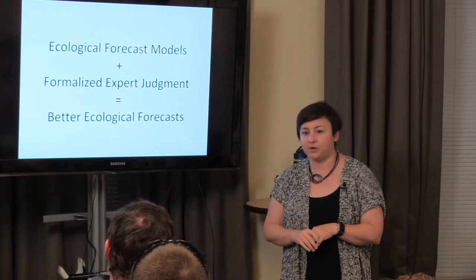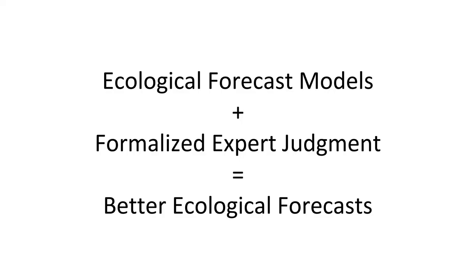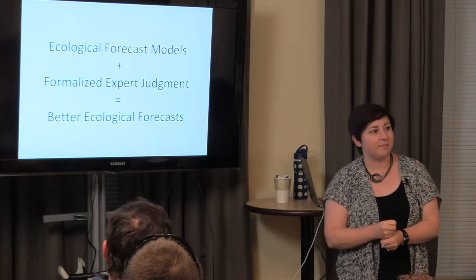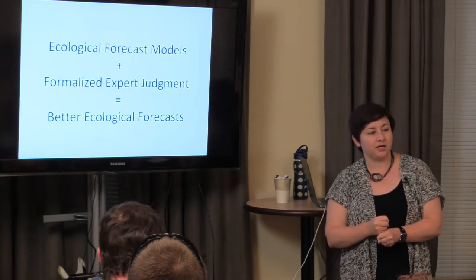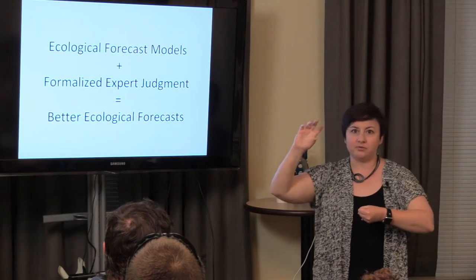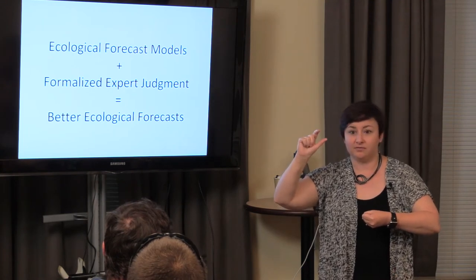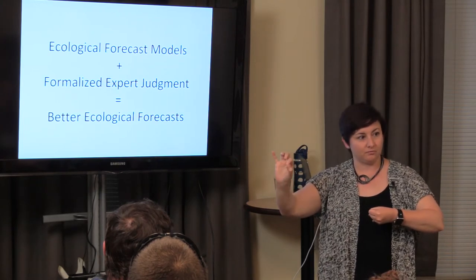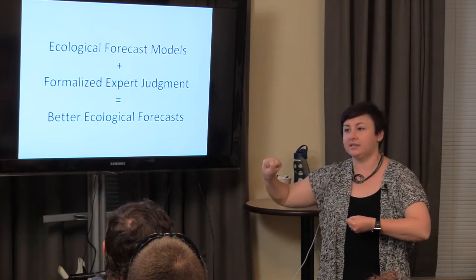Especially at this stage where ecological forecasts are really nascent, if we think about how we combine ecological forecasts with formalized expert judgment — really understanding the expert's assessment of a particular problem — we can actually get better ecological forecasts. That might be something useful to operationalize as we work to improve model skill over time. We don't have to wait for models that perform only slightly better than 50-50; we can get decision-relevant forecasts by combining these more effectively.